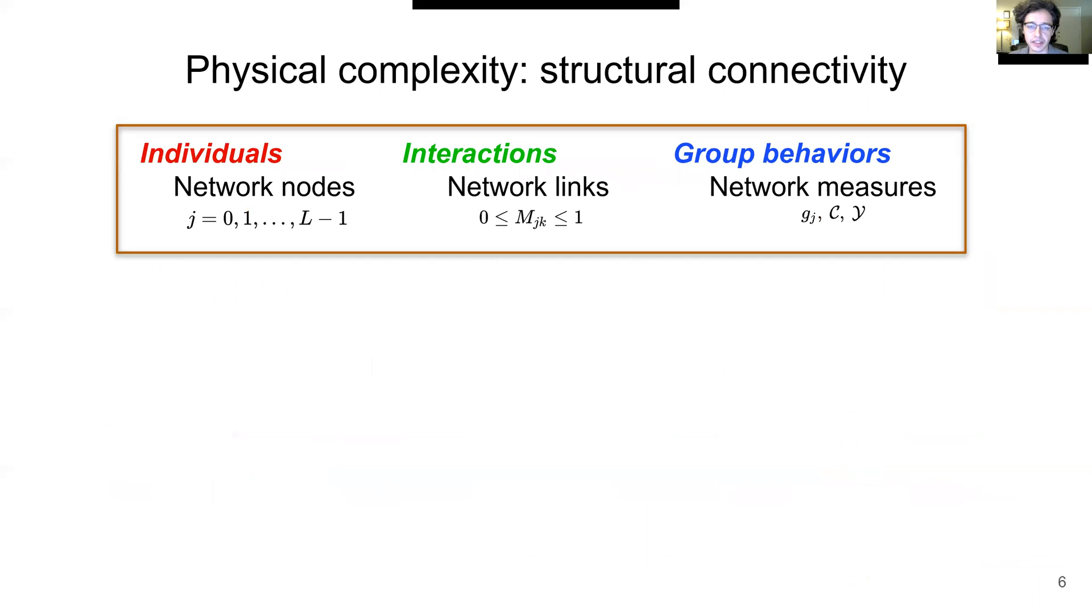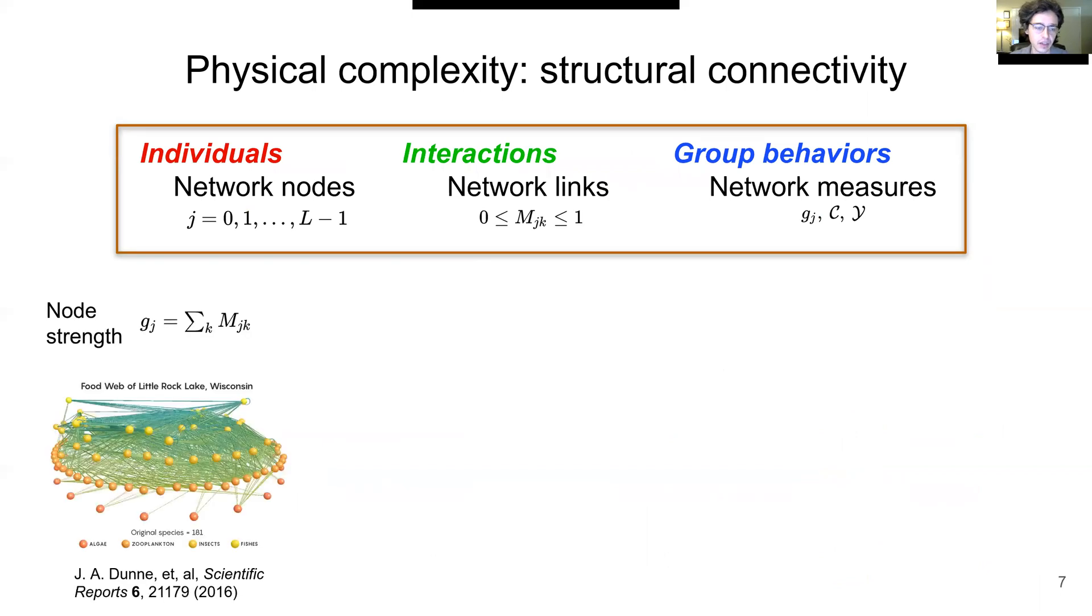An important abstraction in the study of complex networks is network analysis. Individuals could make up the nodes of a network, their interactions could be encoded in the links between those nodes, and the group behaviors could be quantified with network measures. For example, node strength is the sum of all of the link weights on a specific node, and the distribution of node strengths can quantify the presence of hubs in a network. In a food web, there is a broad node strength distribution which signals the presence of hubs, which are species critical to the functioning of the food web, and if removed, could cause its collapse.